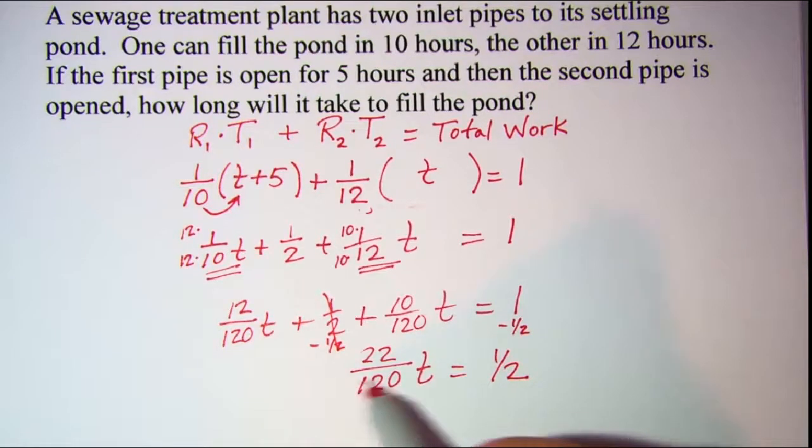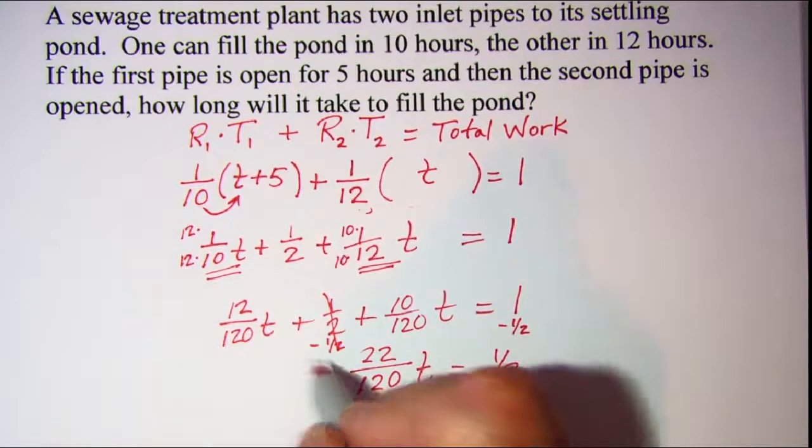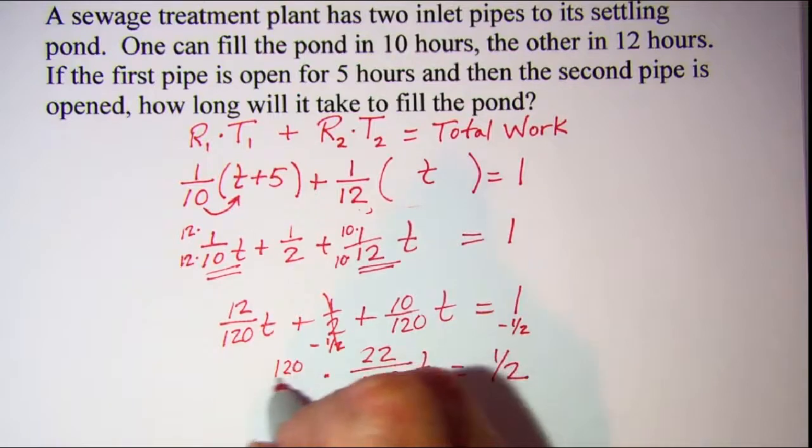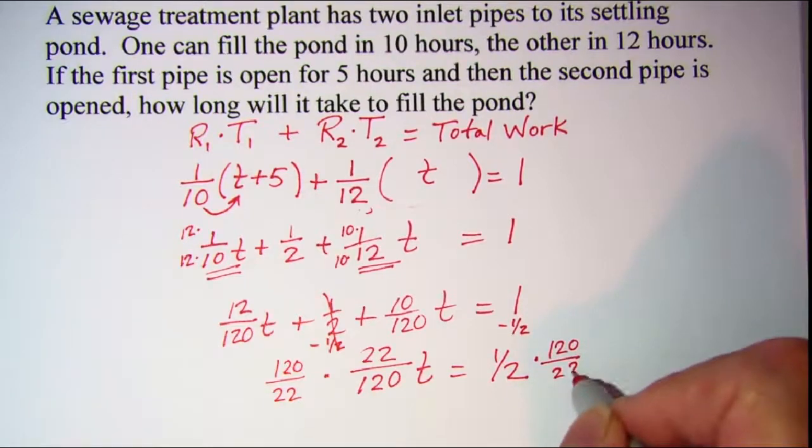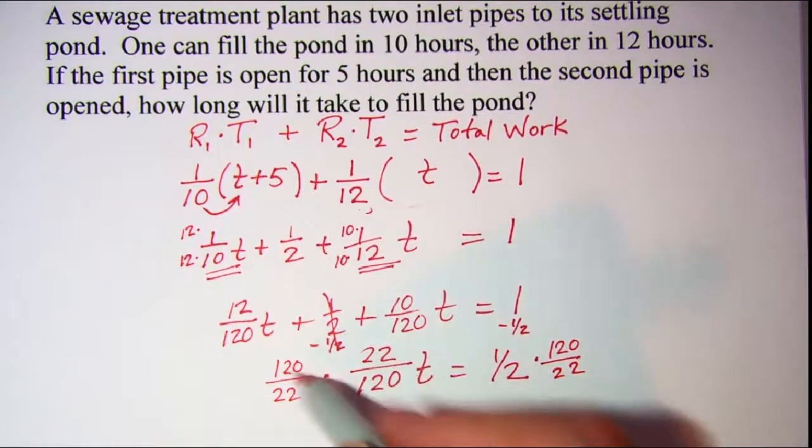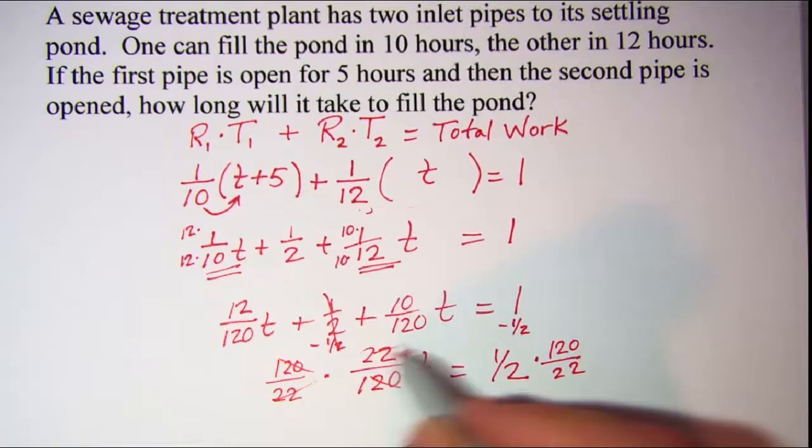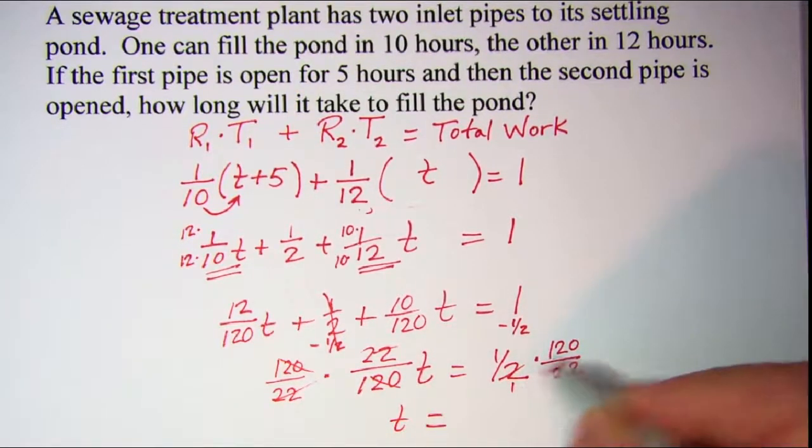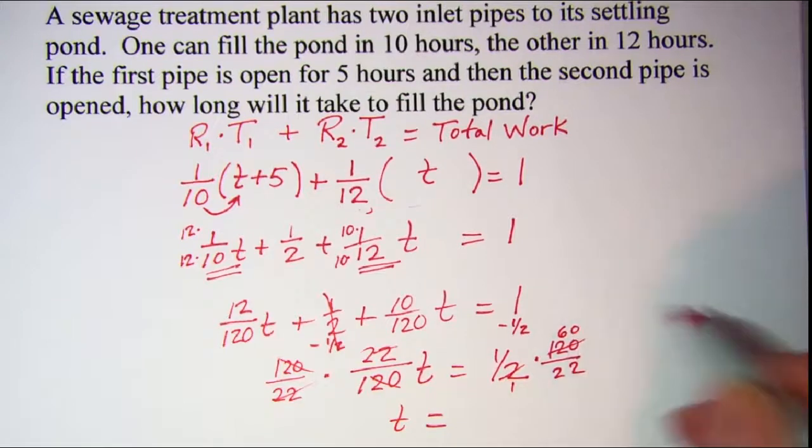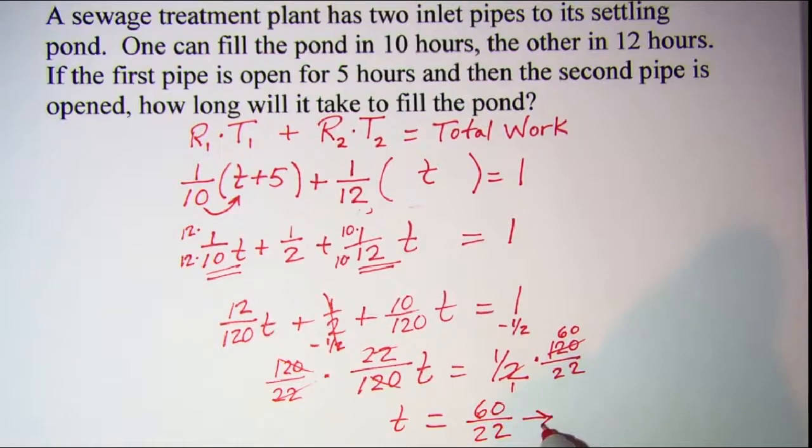To get t by itself, let's multiply by the reciprocal 120 over 22, 120 over 22. These will cancel, and I have t is equal to 60 over 22, which reduces to 30 over 11.